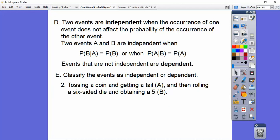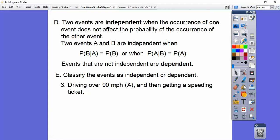Tossing a coin and getting a tails is event A, and then rolling a six-sided die and obtaining a 5 is event B. Well, probability of event B is 1/6, rolling a 5. The probability of rolling a 5 given that we got a tails is still 1/6. The event is independent. Can you see the dice is totally independent of whatever we got on the coin right there?